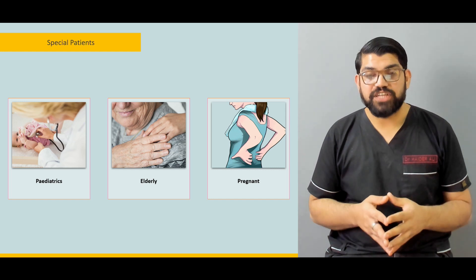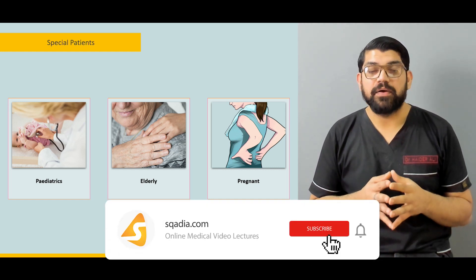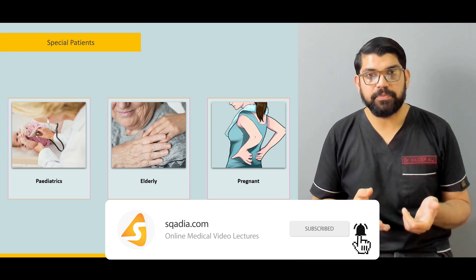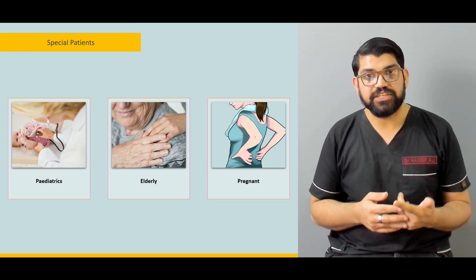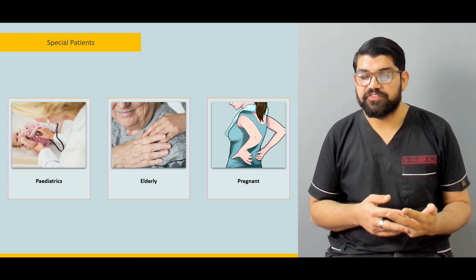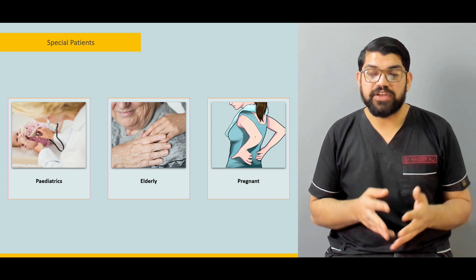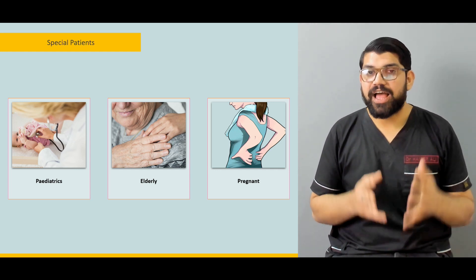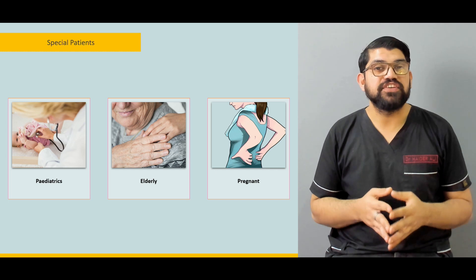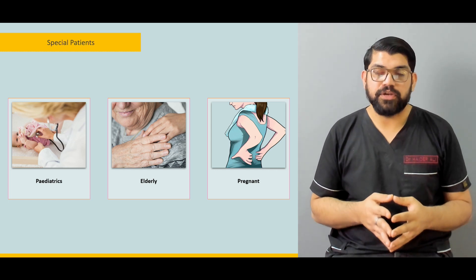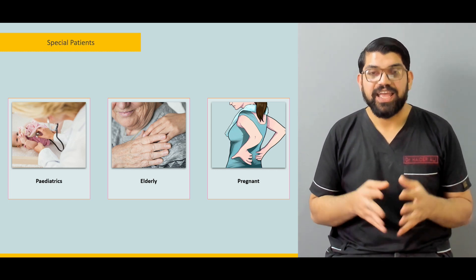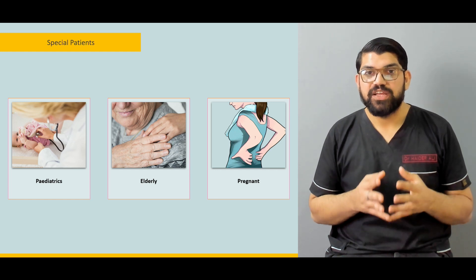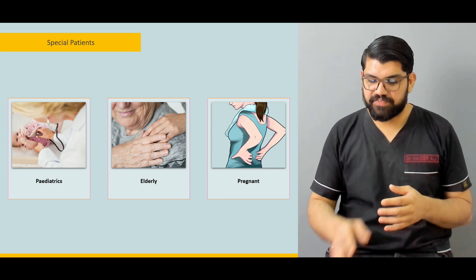We'll touch on some special populations, which includes the pediatric population, elderly population, and pregnant females. How is the pediatric population different from the young adult population, how much focus should be given to elderly patients presenting with vomiting, and what should be done in pregnant females who present with hyperemesis gravidarum.